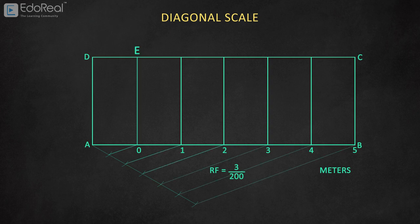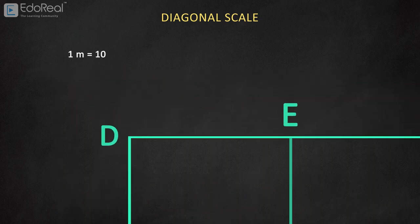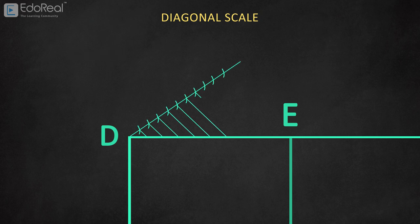Name the zeroth line as E. Now we have to divide the first section into the immediate smaller units of meters, that is decimeters. As 1 meter is equal to 10 decimeters, divide the first section into 10 equal parts, exactly as we have done in the plane scale.